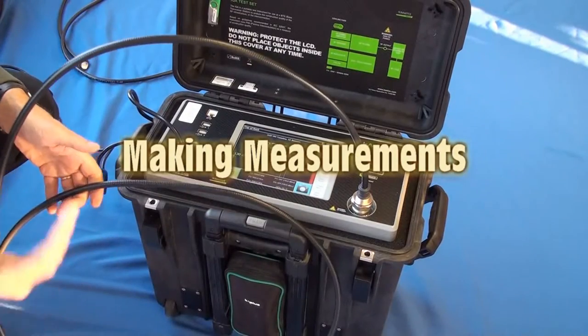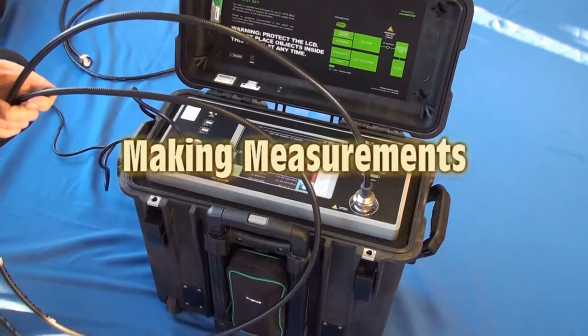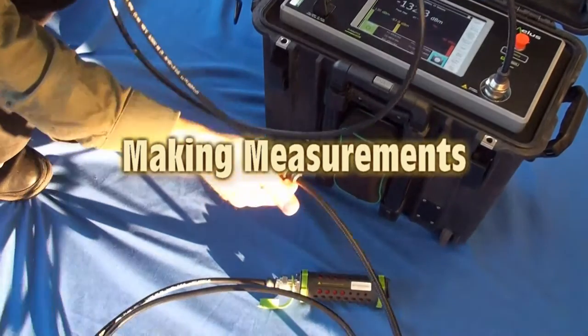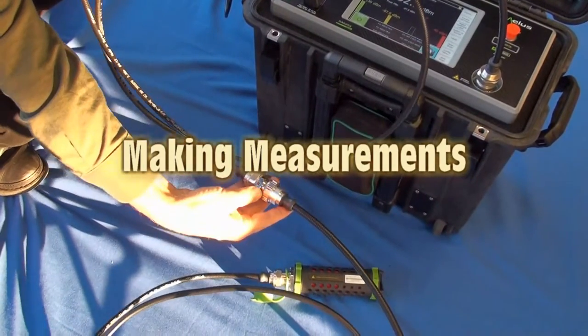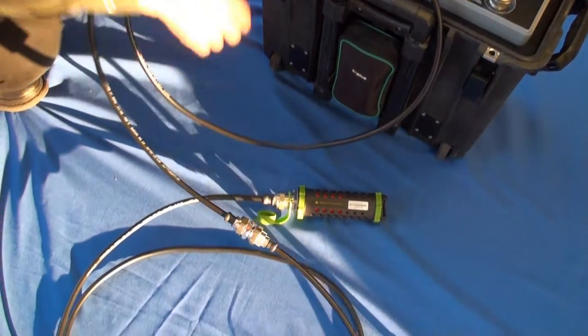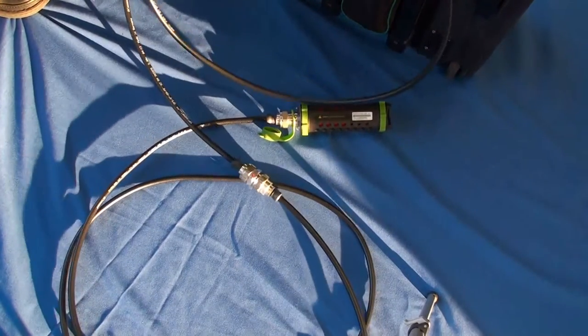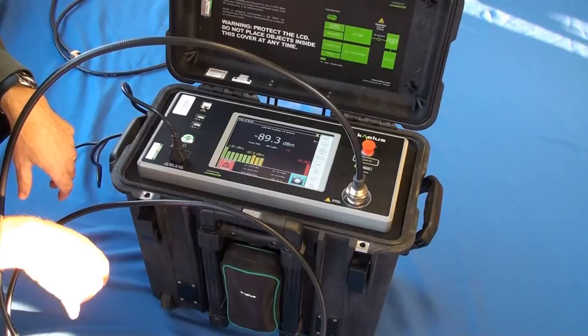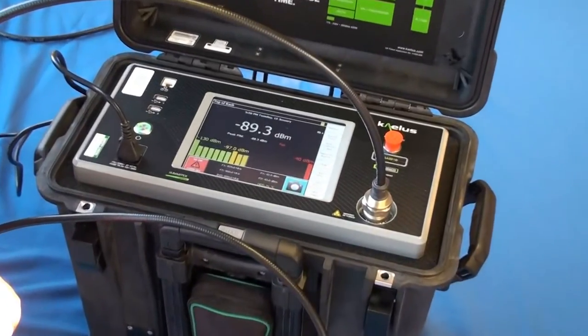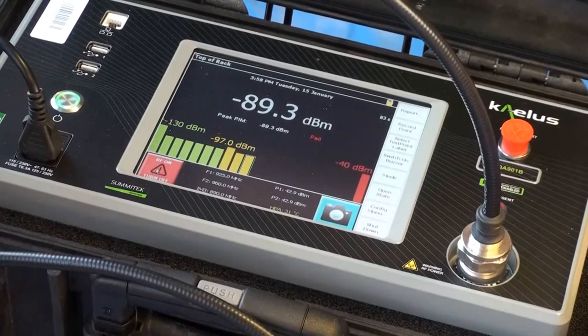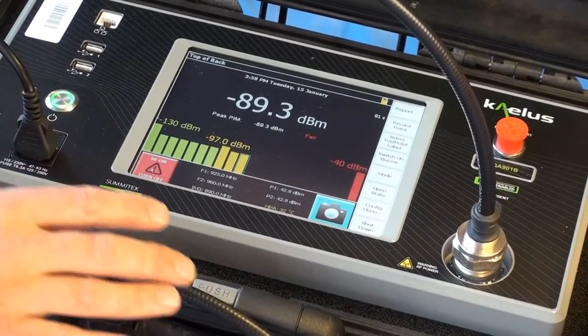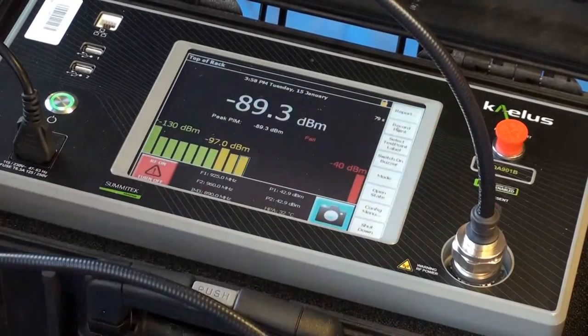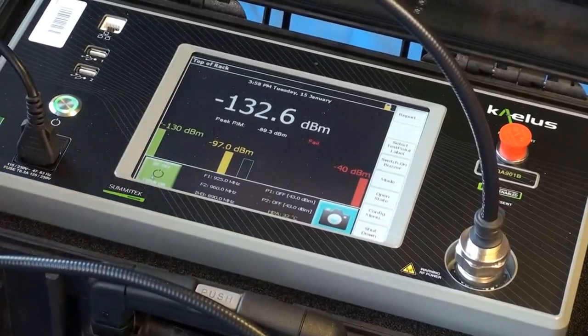So we're now ready to make a measurement on the system. We've connected in another cable and a load and a PIM source in here, just for measurement purposes. So if we make the measurement now, we see that we have a PIM measurement of minus 89. So we know that somewhere in this system there is a source of PIM. And we can record that into the report and stop the measurement.